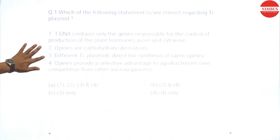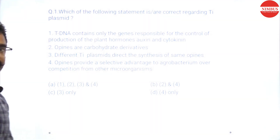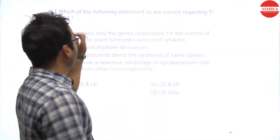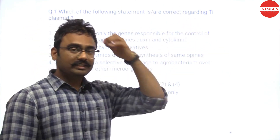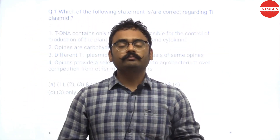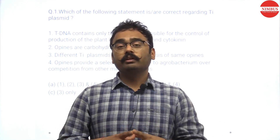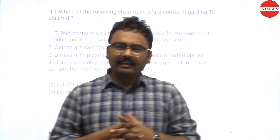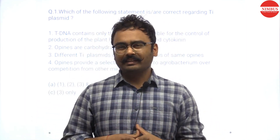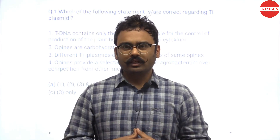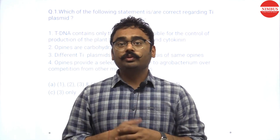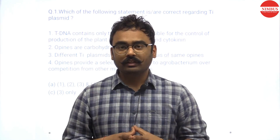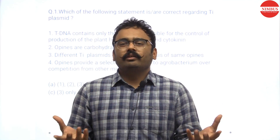Let's start. The first question is asking about what is correct about Ti plasmid. Ti plasmid stands for tumor-inducing plasmid. This plasmid is found in Agrobacterium tumefaciens. Because it has this Ti plasmid, it can induce tumors in plants.